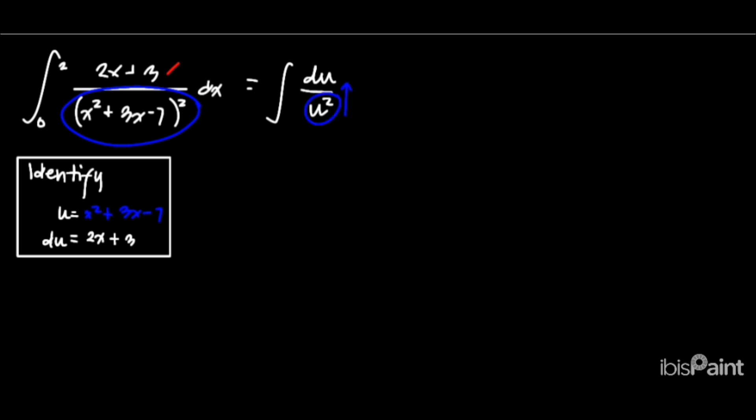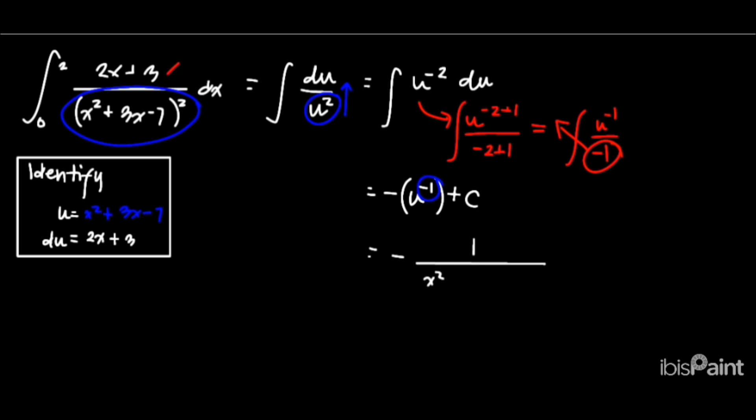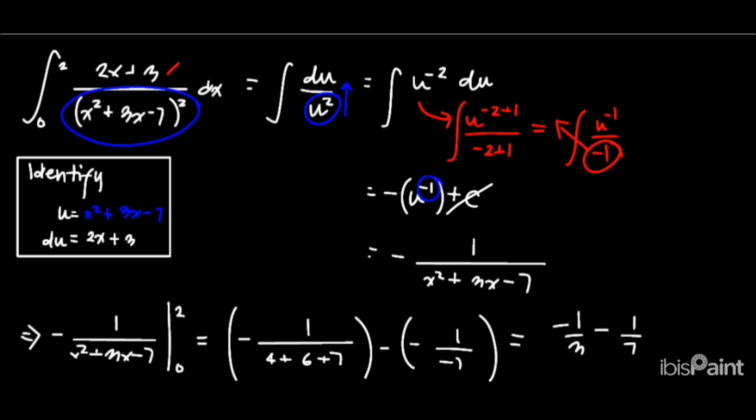To avoid fractions, we rewrite it as a negative exponent: integral of u^(-2) du. Performing the antiderivative sequence, we apply the formula: u^(-1) over negative 1 equals -u^(-1). Bringing the negative exponent back to the denominator and substituting the original expression for u, we get -1/(x² + 3x - 7). Since this is a definite integral, we ignore plus c. Now, we substitute for the limits of F(b) minus F(a). Evaluating this expression gives us a final answer of -10/21.